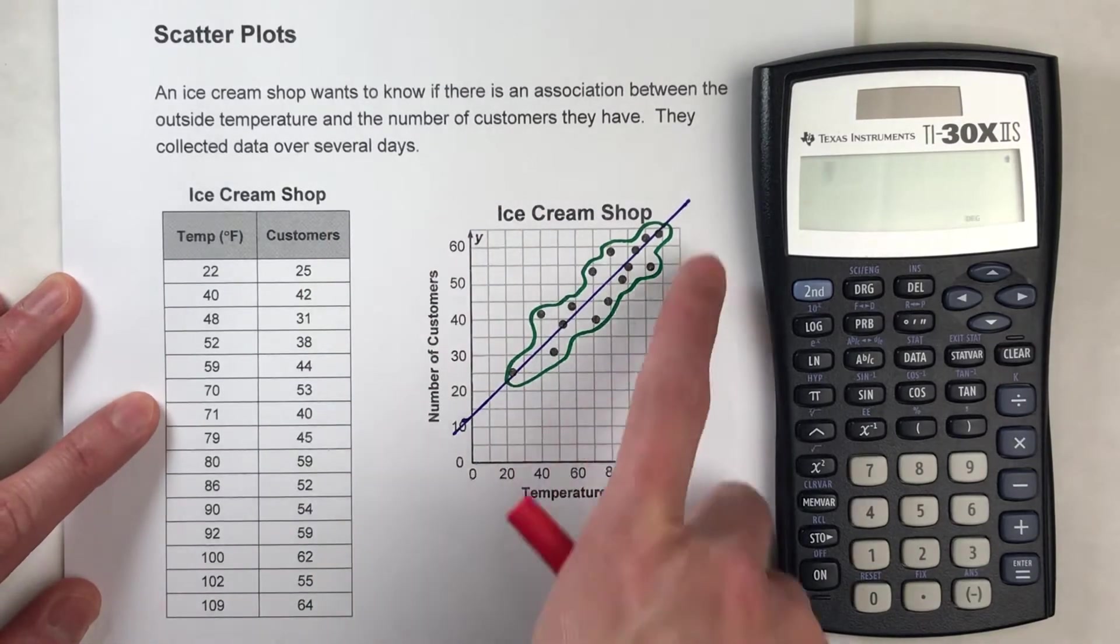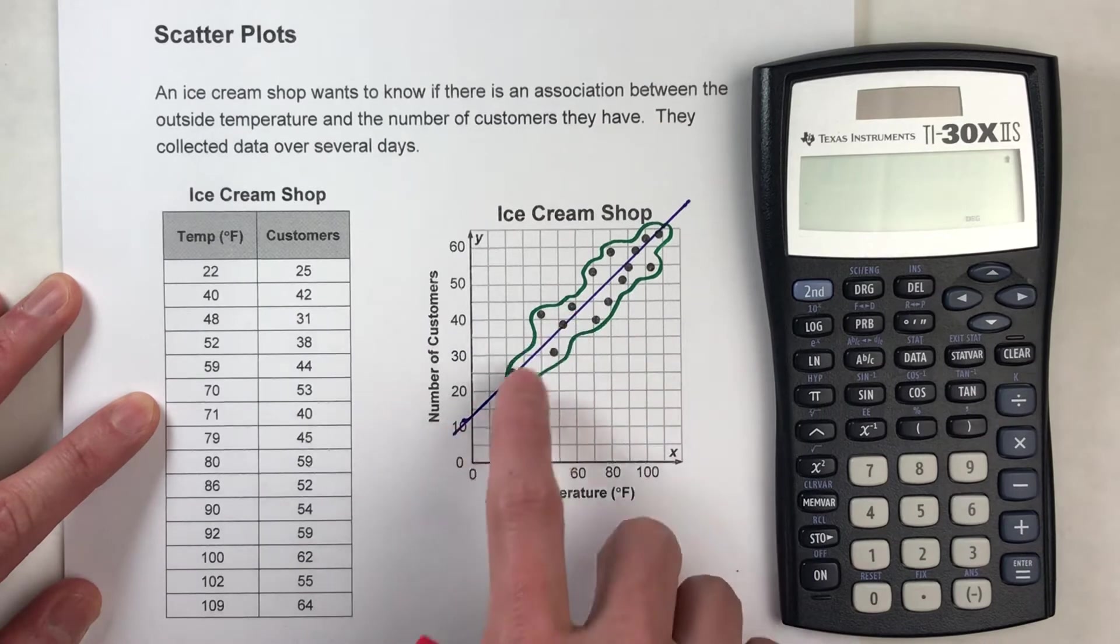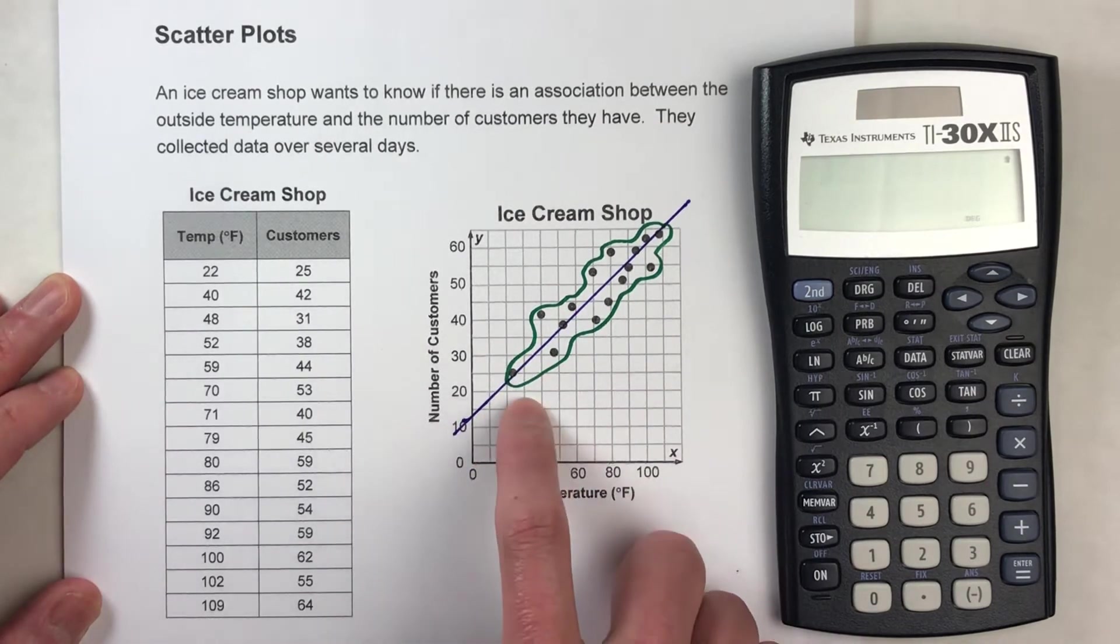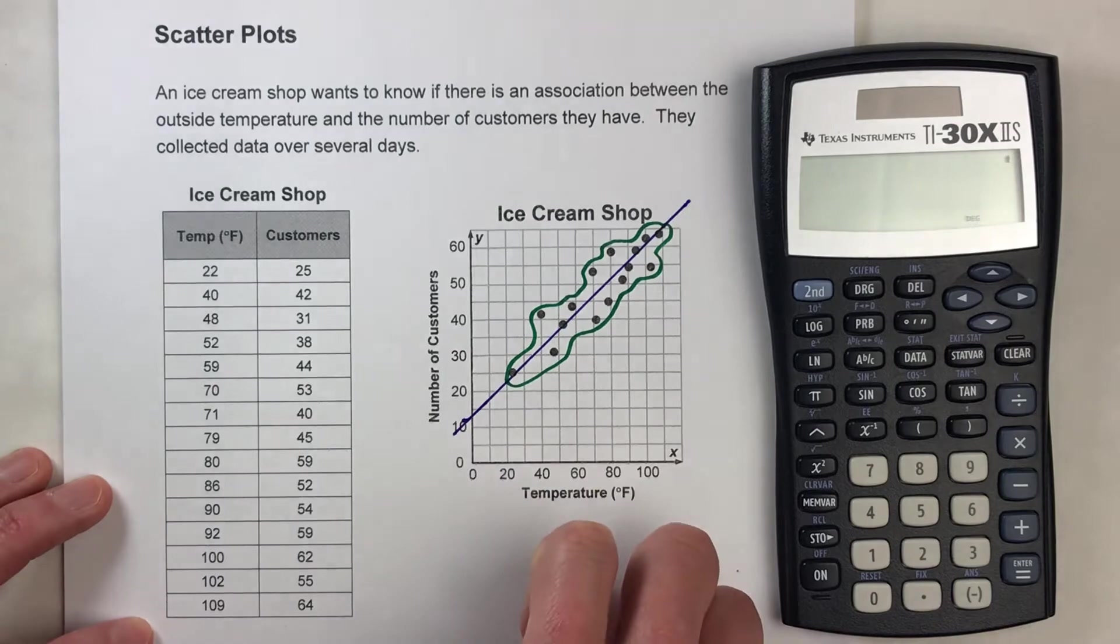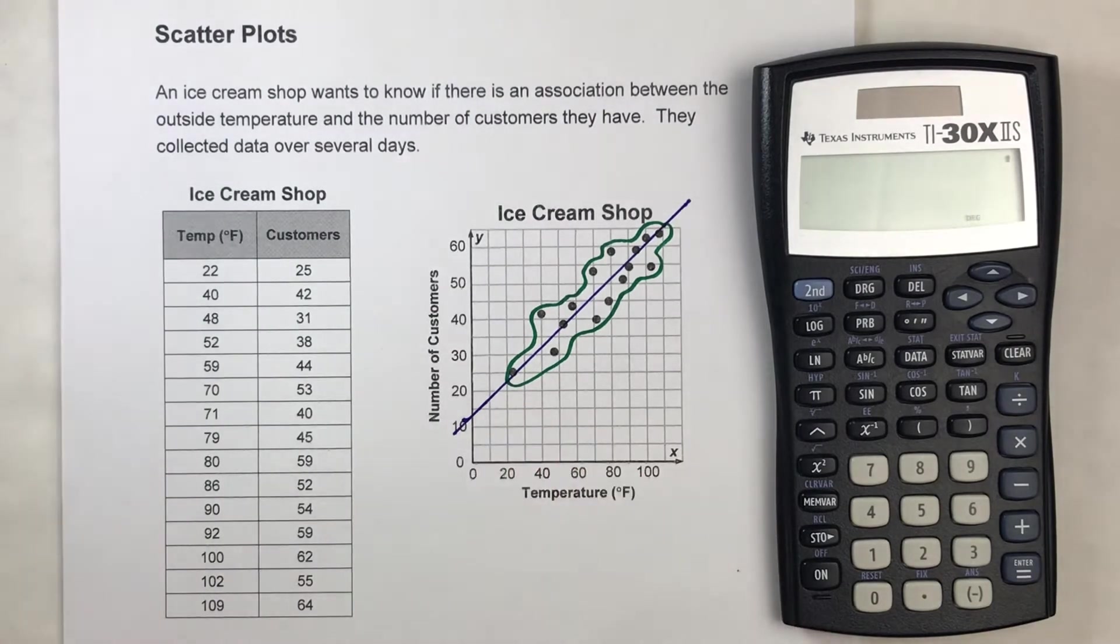So let's do this example here. Now, I've already drawn my trend line on my scatter plot. And if you want to see how I did that, click the link down below in the information section and there's a video on how I did that.